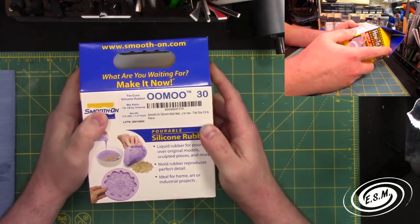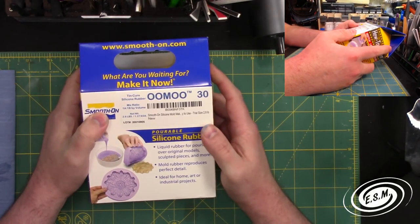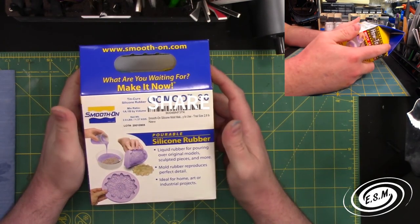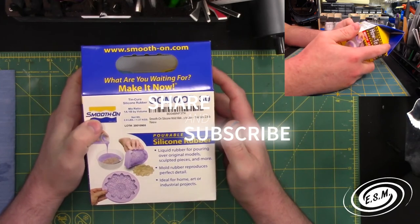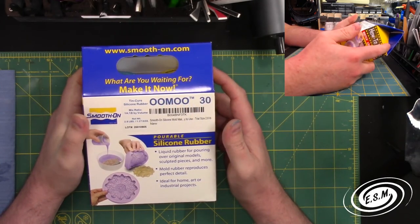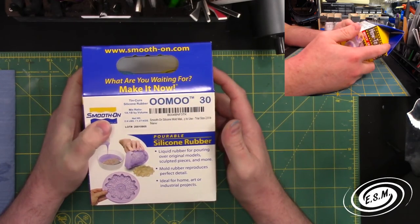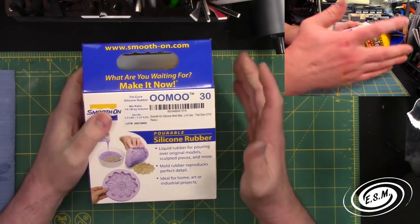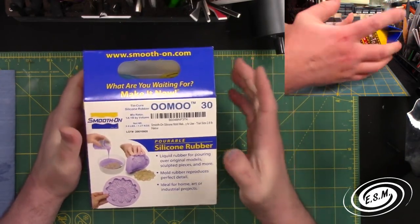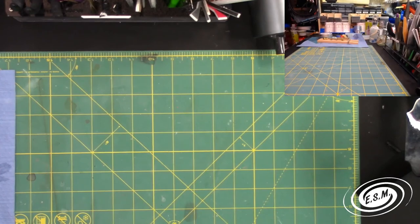This right here, this Smooth-On Smooth-Cast 300. This is a pretty good resin, about 30-minute pot life and a 6-hour cure time. But it needs to be vacuum degassed, and I've got a tiny vacuum degasser coming because I'm only going to be doing little things.